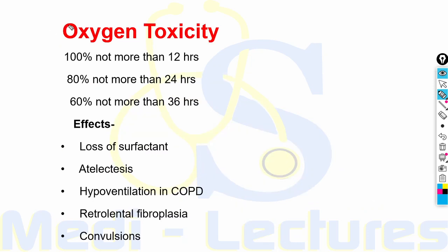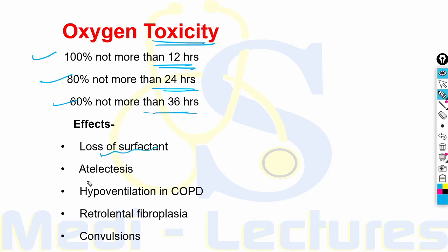Oxygen is also toxic. Toxicity occurs if it is given at 100% for more than 12 hours, 80% for more than 24 hours, or 60% for more than 36 hours — so oxygen should be weaned as soon as possible. Effects of oxygen toxicity include loss of surfactant, atelectasis (collapse of alveoli), hypoventilation in COPD patients dependent on CO2 drive, retrolental fibroplasia especially in neonates, and convulsions.